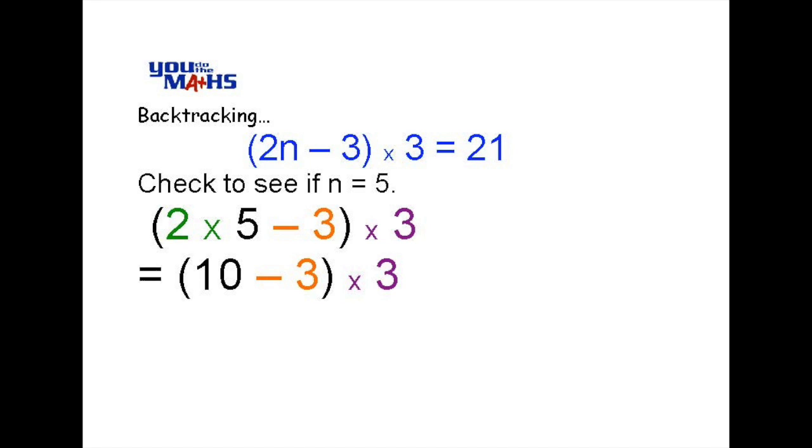Now going to the brackets, 2 multiplied by 5 is equal to 10. So inside the brackets we've got 10 take away 3 multiplied by 3. We always do what's in the brackets first. So we should be able to work out what 10 take away 3 is which is 7 and then we multiply that by 3. Our result then is 21 which is the correct answer. So our solution of n equals 5 does work and we've found the solution to the equation.